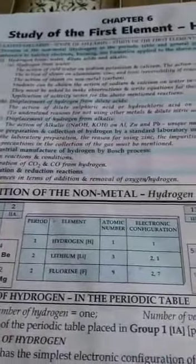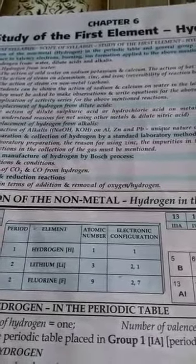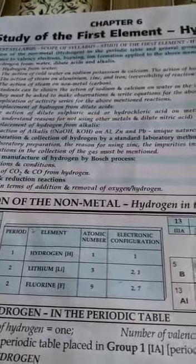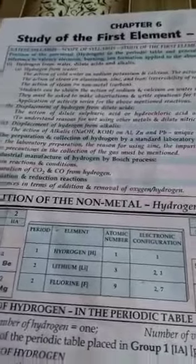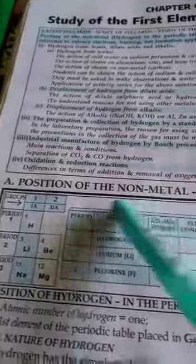In this chapter, we have to study the position of hydrogen, characteristics of hydrogen, and how hydrogen is formed. It means preparation of hydrogen also. So let us first study the position of hydrogen.